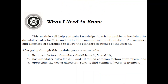Let's start with What I Need to Know. This module will help you gain knowledge in solving problems involving the divisibility rules for 2, 5, and 10 to find common factors of numbers. The activities and exercises are arranged to follow the standard sequence of the lessons. After going through this module, you are expected to: 1. List down factors of numbers divisible by 2, 5, and 10. 2. Use divisibility rules for 2, 5, and 10 to find common factors of numbers, and 3. Appreciate the use of divisibility rules to find common factors of numbers.